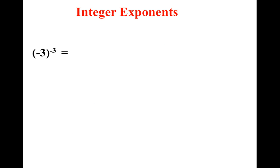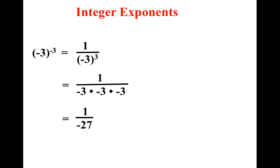See if you guys can handle this one. The negative 3s were left over in the denominator — that meant three negative 3s were left over in the denominator. Negative 3 times negative 3 times negative 3 is negative 27. And 19 to the 0 power? Well, that's a trick question — the answer is 1. Anything to the 0 power is always 1.